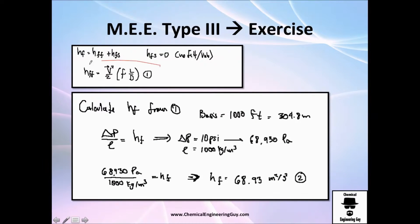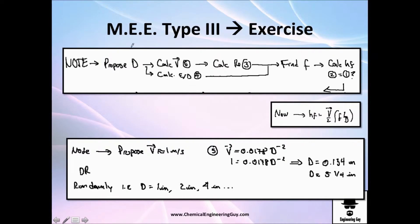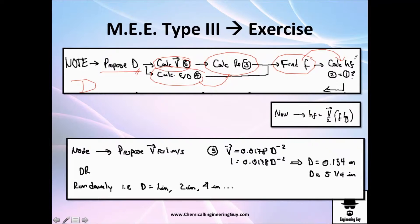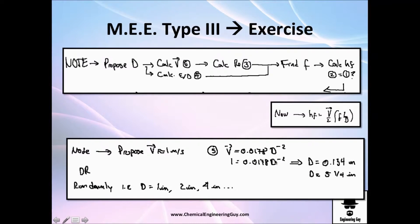We now have equations 1 through 5. To find the diameter, we must propose a diameter, then calculate velocity, relative roughness, Reynolds number, friction factor, and finally friction loss — then compare that calculated friction loss with the actual value of 68.9 J/kg. If the calculated value is close to that number, we're done. A useful trick: normal fluid operation is around 1 meter per second, so find the diameter that gives that velocity — which works out to about 5 and 1/4 inches.